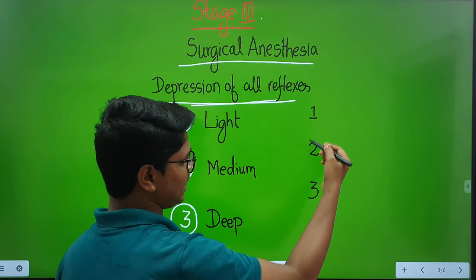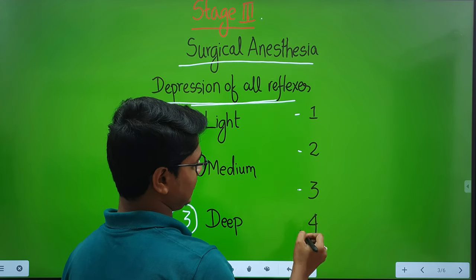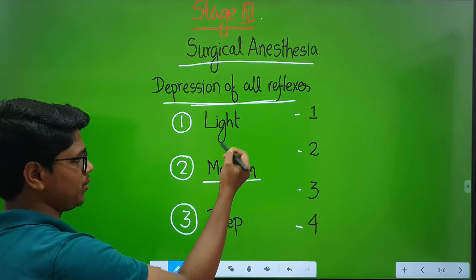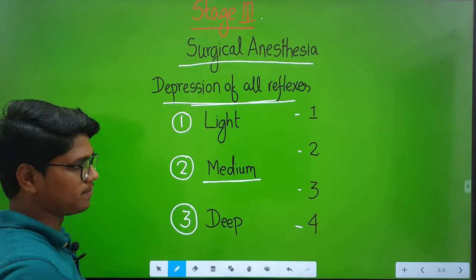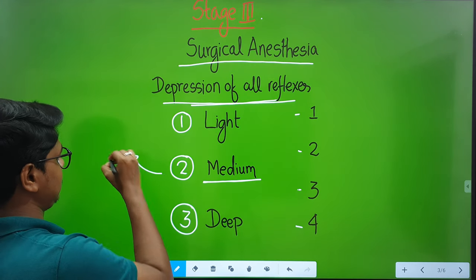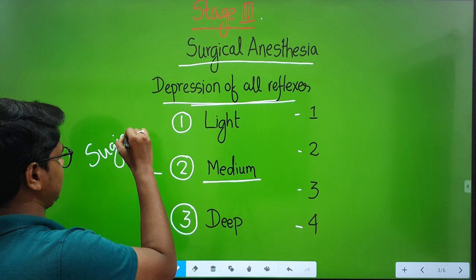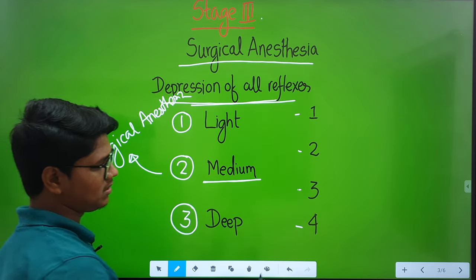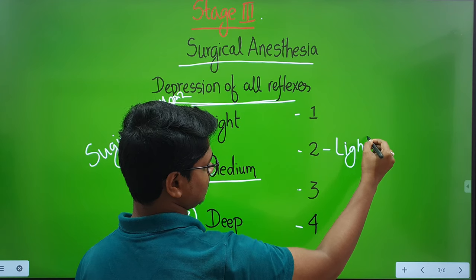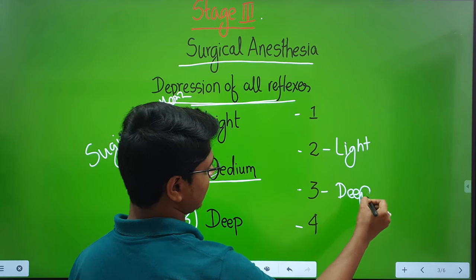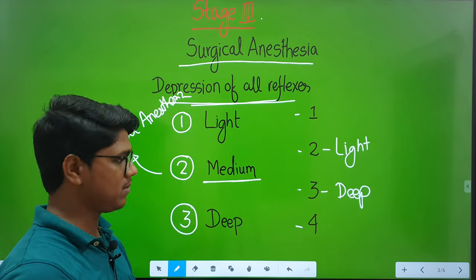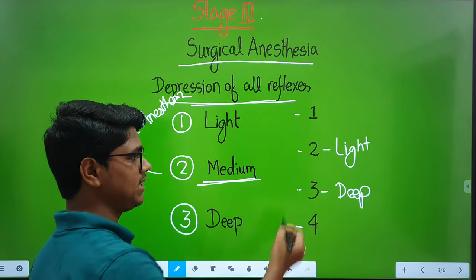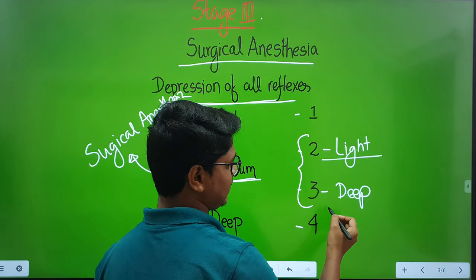In human anesthesiology it has been divided into four planes — Plane 1, 2, 3, 4. In veterinary we use light plane, medium plane, and deep plane. The medium plane is known as the plane of surgical anesthesia. Plane 2 is known as the light surgical plane and Plane 3 is known as the deep surgical plane. If someone asks which plane is the surgical plane, you can say medium; if they want numerical, you can say Planes 2 and 3.